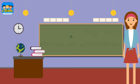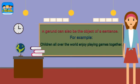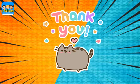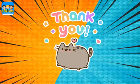A gerund can also be the object of a sentence. For example: 'Children all over the world enjoy playing games together.' Here, 'playing' is a gerund acting as the object in the sentence.